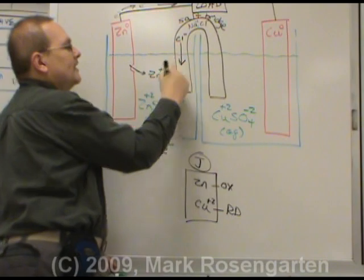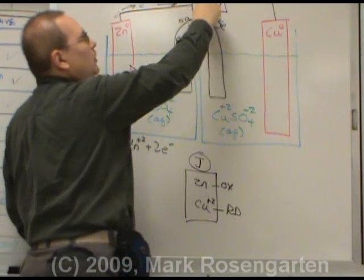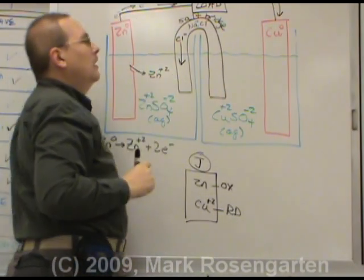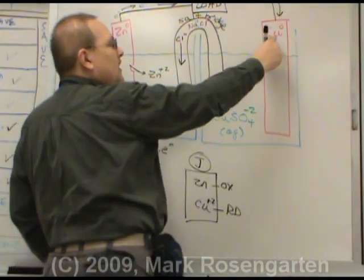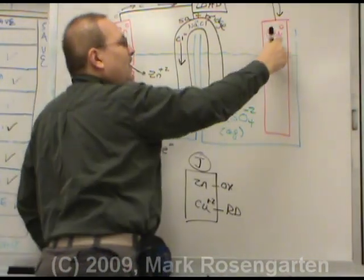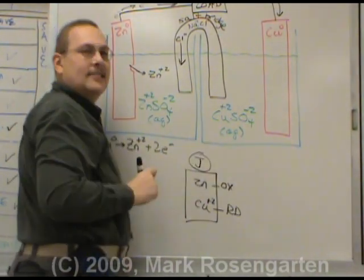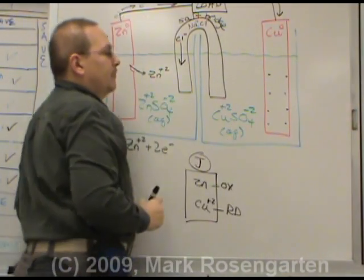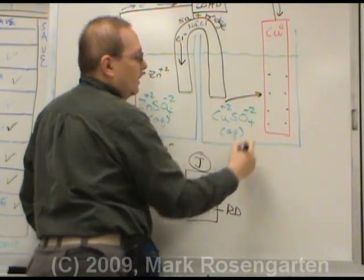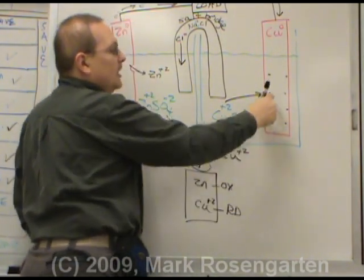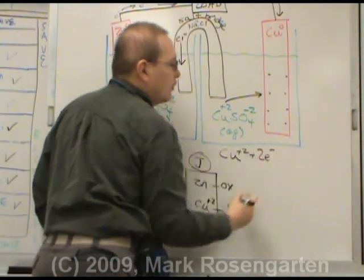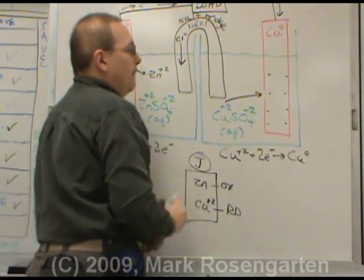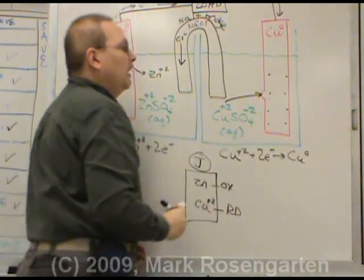After the load is finished using the electrons, the electrons get pulled through the wire into the copper strip. But of course it's not copper zero that's gaining electrons. Metals can't gain electrons, only metal ions can. So the electrons coat the strip. The copper plus two ions are attracted to those electrons, and as soon as they touch the metal strip they pick up those electrons and turn into solid copper. So as soon as they touch the strip, the copper strip gets a little bit larger.